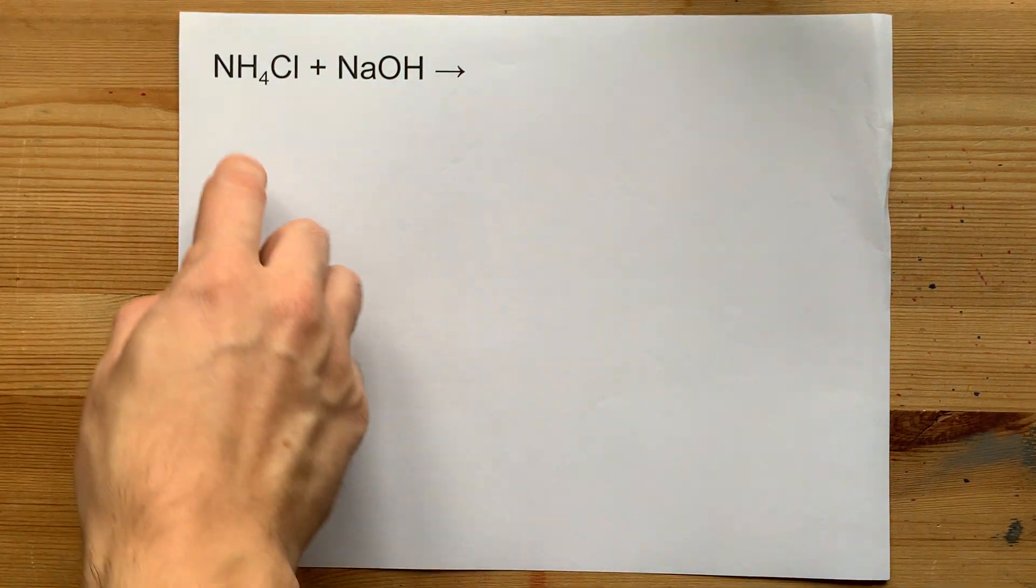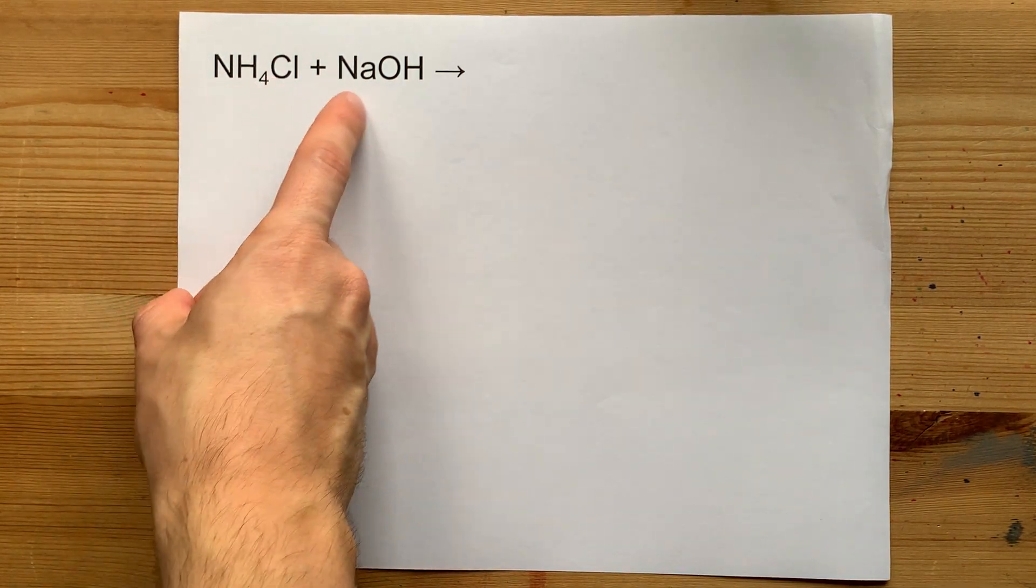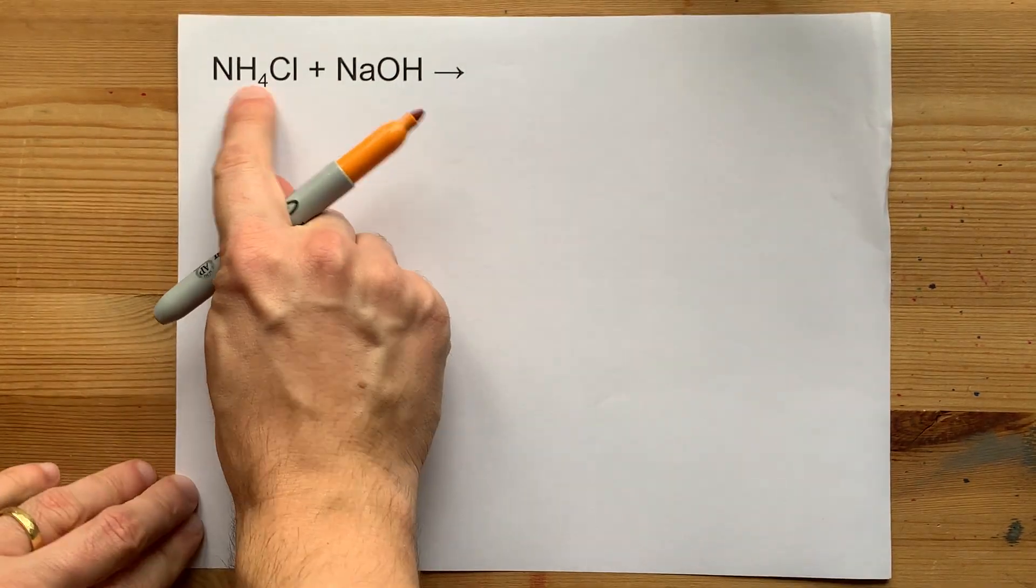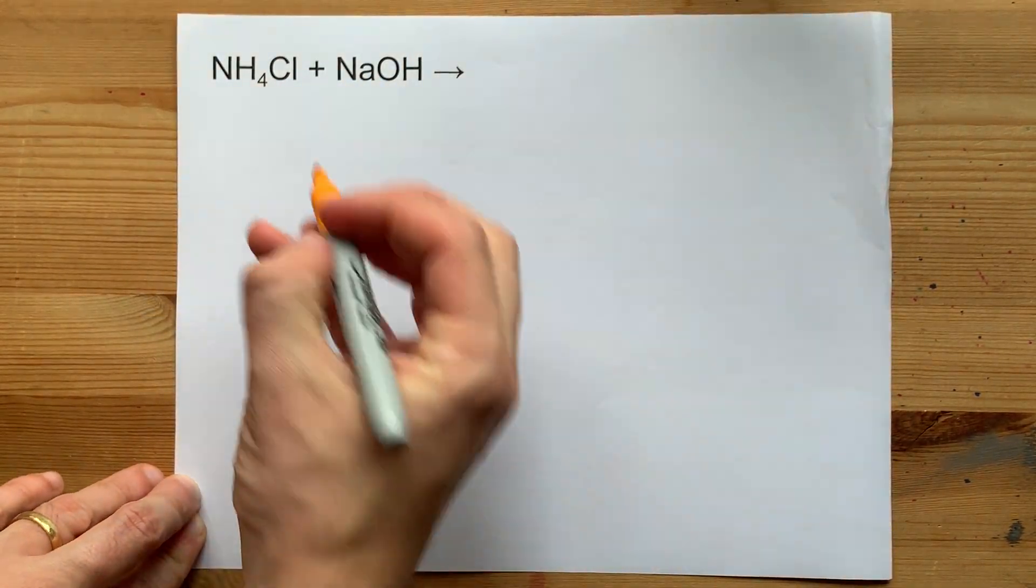What reaction occurs between ammonium chloride and sodium hydroxide? I want to point out that these are both two pairs of positive and negative ions.